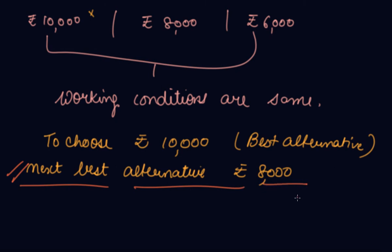This is your opportunity cost. You are sacrificing 8,000 to earn 10,000. This is your next best alternative to 10,000. You are sacrificing this, so this is your opportunity cost.